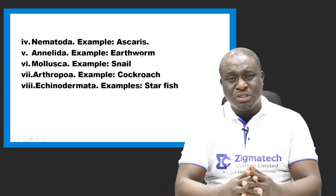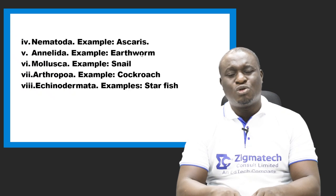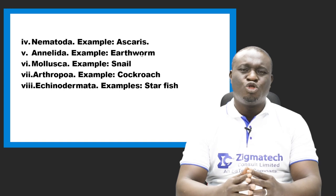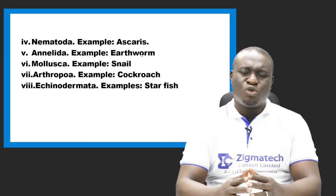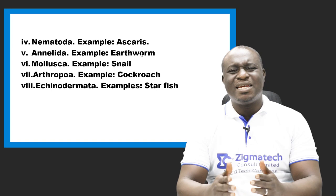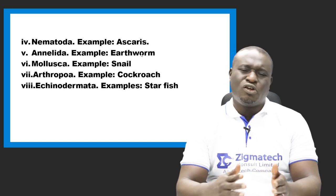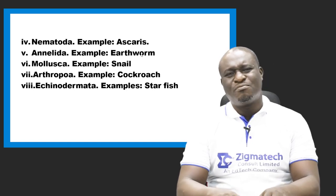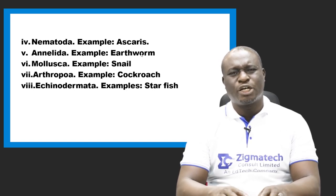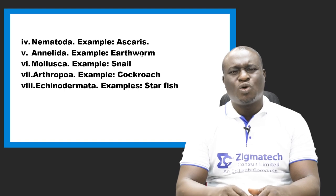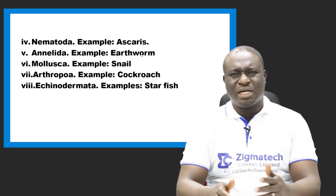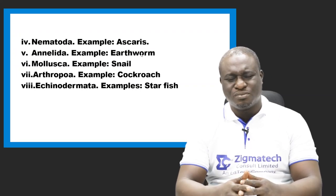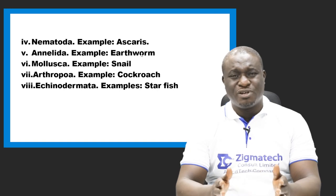We have the Nematoda, also called roundworms. An example is Ascaris lumbricoides. Number five, we have the Annelida, also called segmented worms. Examples include the earthworm and the leech. They fall under Annelida. Some are parasitic while some are free-living.